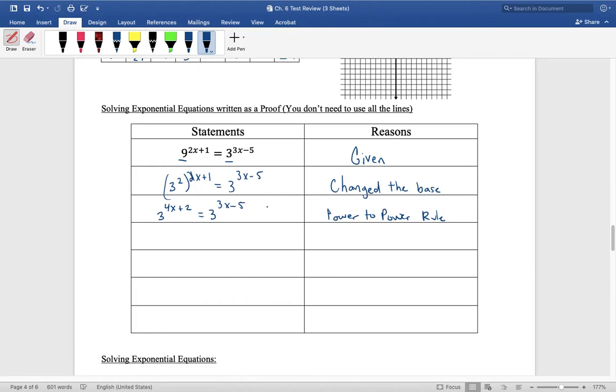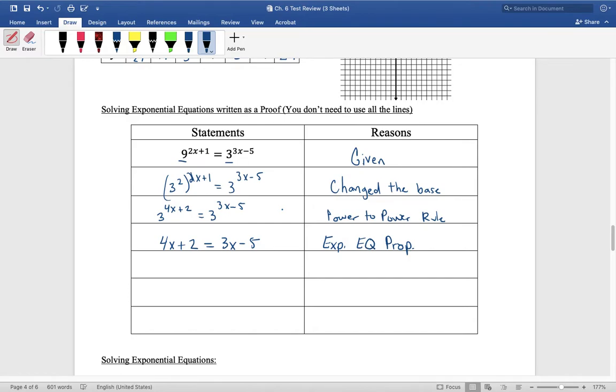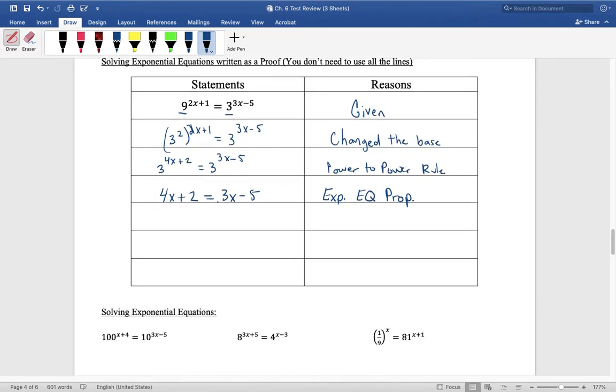Now I have a position where the base is the same, so I can drop down these exponents. If the bases are the same, the exponents must be the same. This is our exponential equality property, the main rule we did in class. This lesson, Chapter 6, was about the exponential equality property.